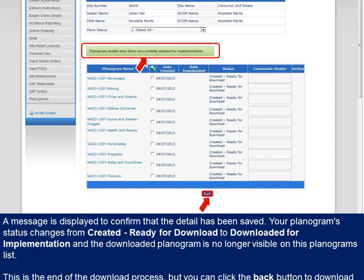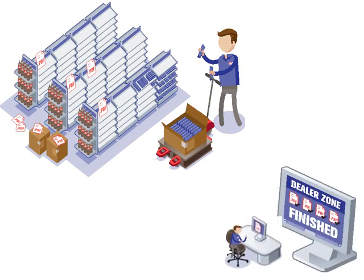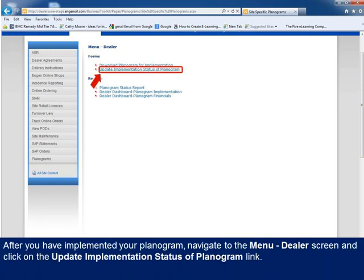The dealer proceeds to implement the planogram by merchandising the site according to the planogram design. On completion of the implementation, the dealer is required to confirm the implementation by logging into the planogram system and updating the date of the implementation. That activity is performed by navigating back to the dealer menu screen and clicking on the Update Implementation Status of Planogram link.